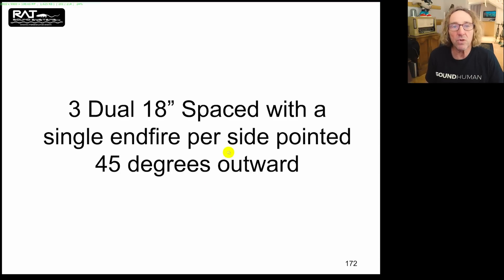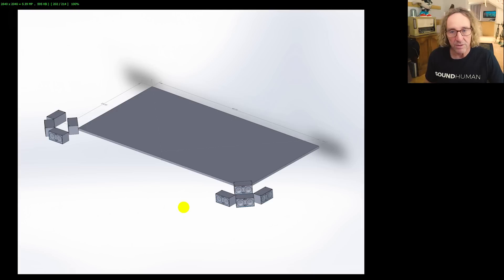Three dual 18 inch spaced with a single endfire per side pointed 45 degree output. So this was kind of the culmination of the subarray efforts on three tours: the Blink, Chili Peppers, and Soundgarden tours that I was really diving in and experimenting on. And this ended up being what I used for Soundgarden. Having no spacing between the arc is important for that high frequency response. And this is using the endfire. Remember, we had the endfire array where we were 45 degrees pointed out, but it got a little dead in the center.